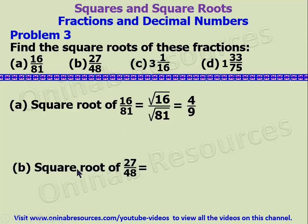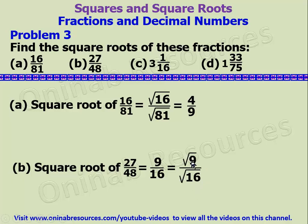We go to B: the square root of 27 over 48. Now 27 is not a perfect square and 48 is not a perfect square, but the fraction is not in its simplest form. We can divide by 3: 27 divided by 3 gives 9, and 48 divided by 3 gives 16. So we have 9 over 16. The square root of 9 over 16 is the square root of 9 over the square root of 16. The square root of 9 is 3, and the square root of 16 is 4. So the square root of 27 over 48 is 3 over 4.